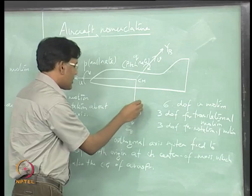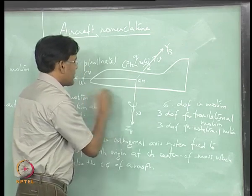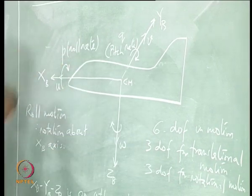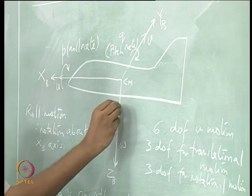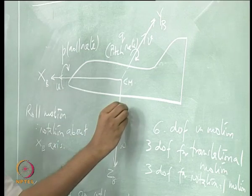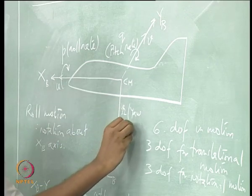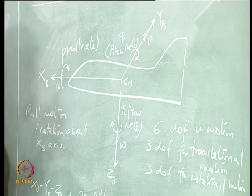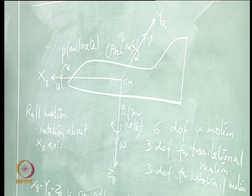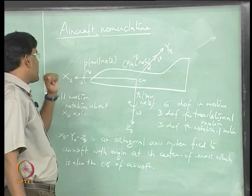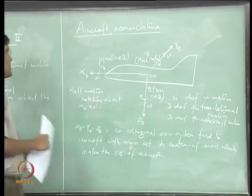Motion in the xy plane about the z axis is yawing. The positive yawing motion is when Xb is moving towards the Yb axis, and that rotation is about the z axis. This is yaw, and the variable associated with this motion is r, called yaw rate. So the aircraft has three velocities — u, v, and w — along these axes describing translational motion, and three rotational motions about Xb, Yb, and Zb given by p, q, and r, which are roll rate, pitch rate, and yaw rate.